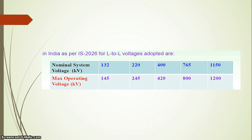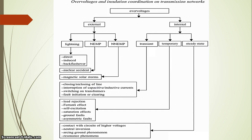In India, as per IS standard 2026, for line-to-line voltage: if the nominal system voltage is 132 kV, the maximum operating voltage is 145 kV. For a 400 kV nominal system voltage, the maximum operating voltage is 420 kV. The 220 kV transmission lines and substations are most common, having a maximum operating voltage of 245 kV.